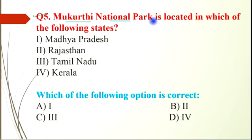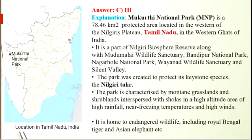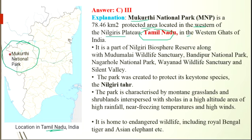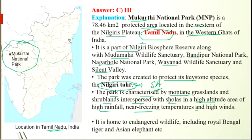Question number 5: Mukurthi National Park is located in which of the following states? The correct option is Tamil Nadu, option C. The park is a protected area located in the western Nilgiris district of Tamil Nadu in western India. It is part of the Nilgiri Biosphere Reserve along with Mudumalai Wildlife Sanctuary, Bandipur National Park, Nagarhole National Park, Wayanad Wildlife Sanctuary, and Silent Valley. The park was created to protect a keystone species, the Nilgiri Tahr, which is also the state animal of Tamil Nadu. The park is characterized by mountain grassland and shrublands at high altitude with high rainfall, near-freezing temperatures, and high winds, and is home to endangered wildlife including the Royal Bengal Tiger and Asian elephants.